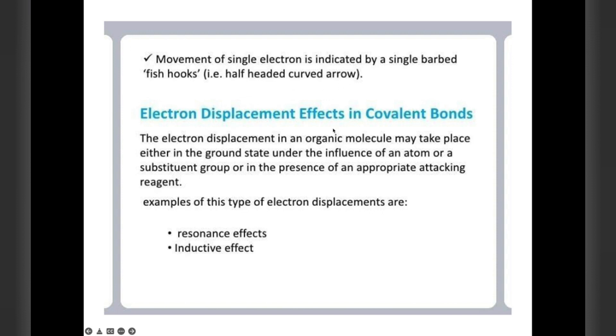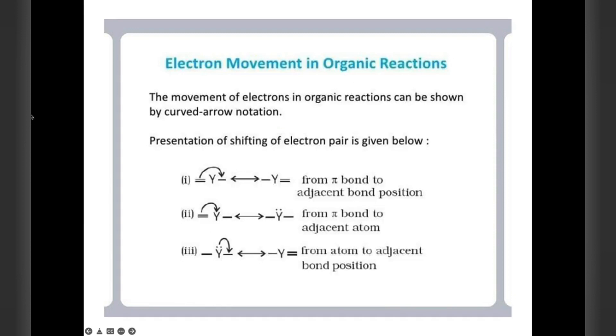Movement of single electron is indicated by single barbed fish hooks, that is half-headed curved arrow. Electron displacement effects in covalent bonds may take place either in ground state because of the influence of atom or substituent group or in the presence of attacking reagent. Resonance effect and inductive effect come under electron displacement effect.